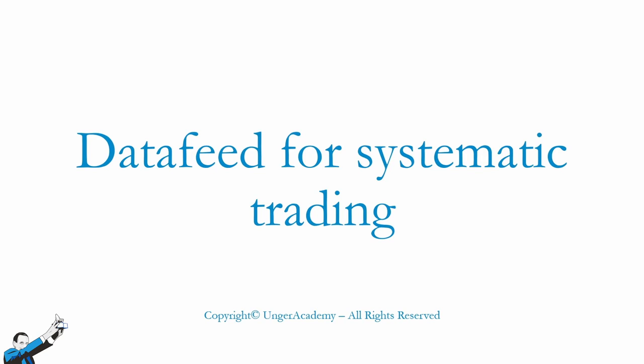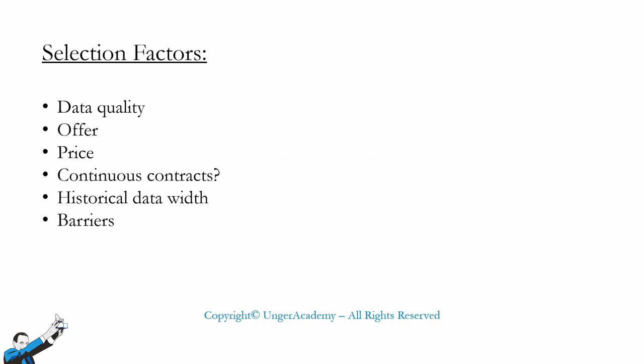During this brief presentation, we'll be examining some data feeds that can be used in systematic trading. In order to choose the best ones, we identified a series of discriminating factors, such as the quality of the data, the offer — which regards the variety of products offered by the various providers — and the cost, which is clearly an important discriminating factor.